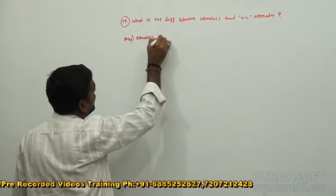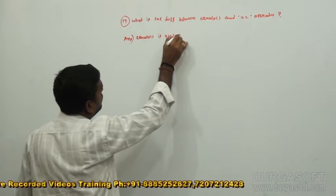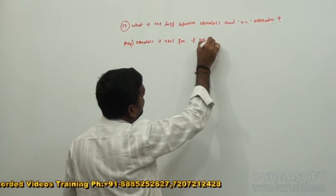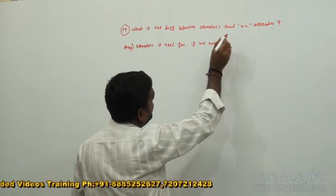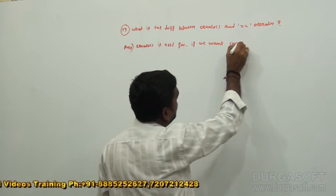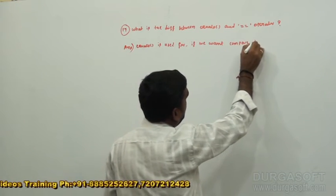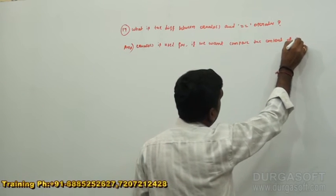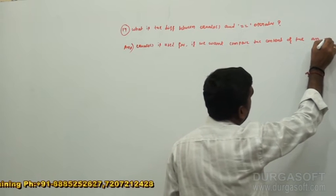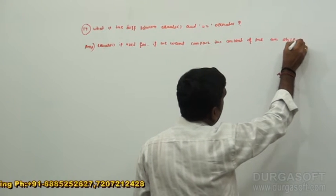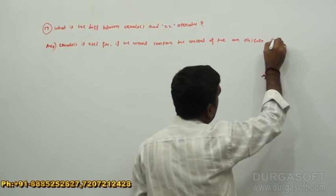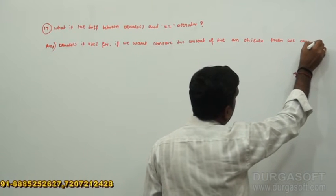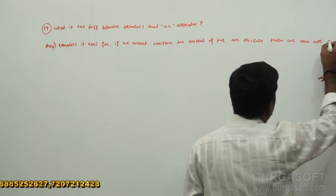The equals method is used when we want to compare the content of an object or objects. Then we can use the equals method.